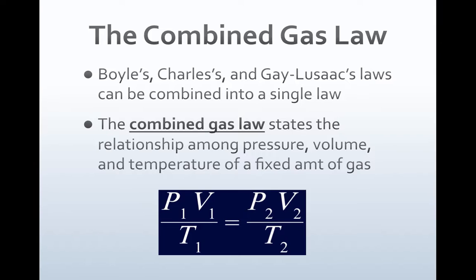If you look at the formula here, notice there are four variables for gases that we look at: pressure, volume, temperature, and the amount of gas. For the Combined Gas Law, the only thing that is constant is the amount of gas, the number of molecules. The pressure, volume, and temperature are all changing at once. So the formula is P1V1 over T1 equals P2V2 over T2.